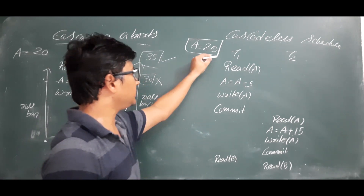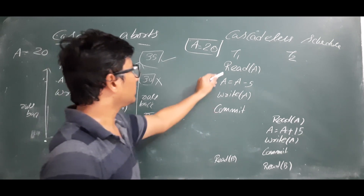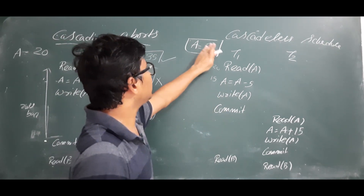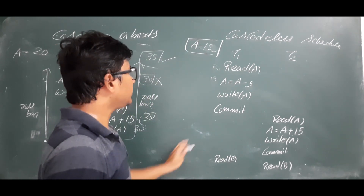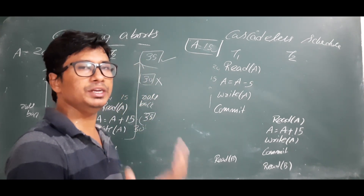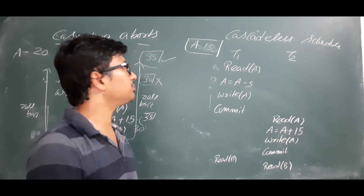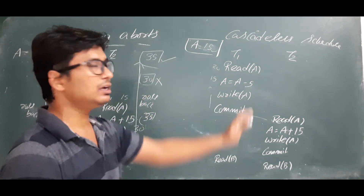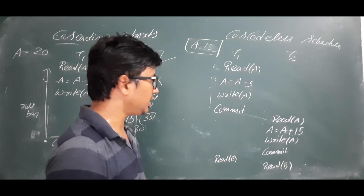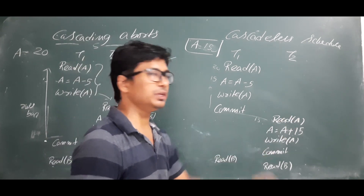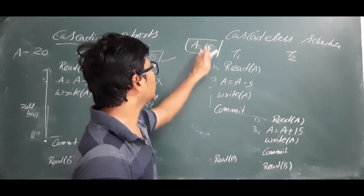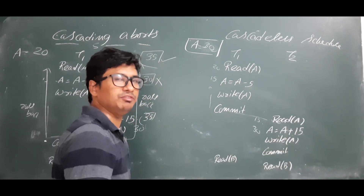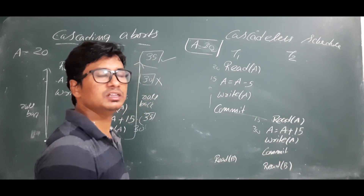Let me explain with an example. Initially A = 20. Transaction one reads A as 20, then A = A - 5, updating it to 15, then writes A temporarily saving it as 15. Now it performs the commit operation — commit means permanently storing 15 in the database. So in the database A is updated to 15, and in memory also it is 15. Now transaction two reads A after transaction one's commit, so it reads 15. Then A = A + 15 = 30, and writes A temporarily as 30.